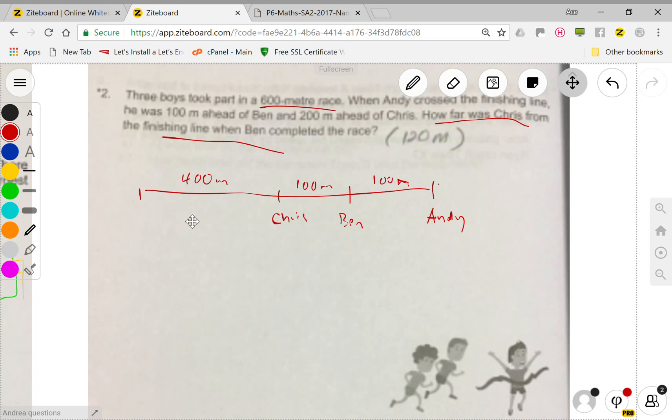So it should look like this: ABC. By the time A completed 600 meters, B only completed 500 and C only completed 400. So the ratio in terms of distance between ABC is 6:5:4.